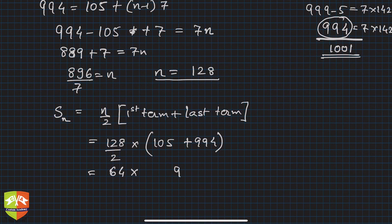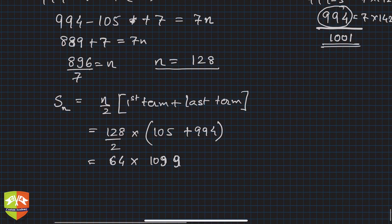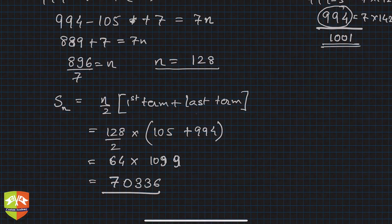So the product will come out to be 70336. 64 into 1099 is 70336. So this is what is the answer.